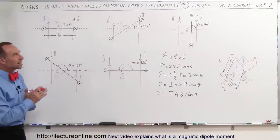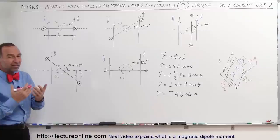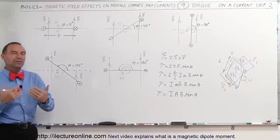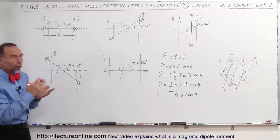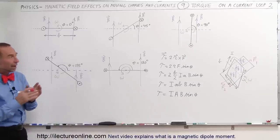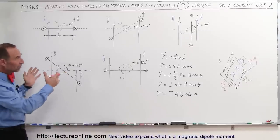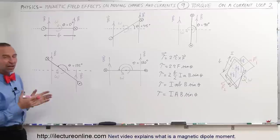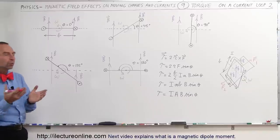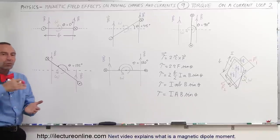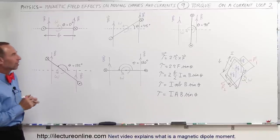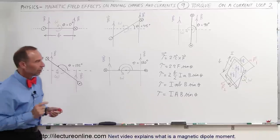Welcome to ElectronLine. Here we get a better sense of how we calculate and define the torque on a current loop. I've tried to illustrate this in various settings of what the current loop would look like at various points in its rotation around the center of axis.